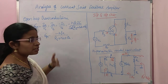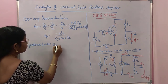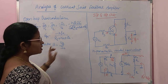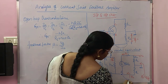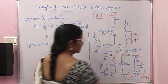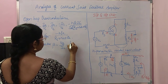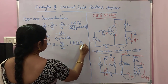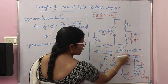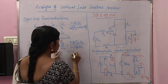Next, we find the feedback factor beta, which equals VF divided by I0. The emitter current flows through RE, giving VF. I0 is minus IC, which equals minus HFE·IB. After cancellation, the feedback factor beta equals RE. Then, RI equals RS plus HIE plus RE, and R0 is infinite because there is no resistance in that path.